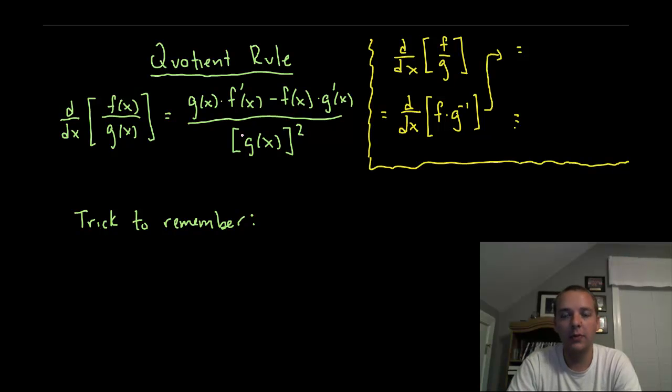The quotient rule is not one of our basic derivative rules because it's not what we would intuitively guess. If you had one function divided by another, you might anticipate that you could just differentiate the top and differentiate the bottom, similar to the sum and difference rule. That is not the case with fractions.